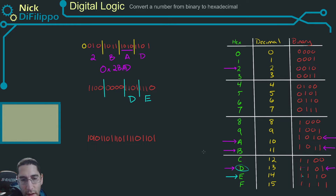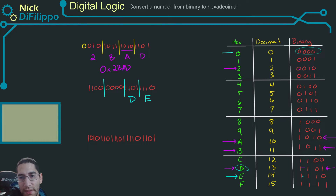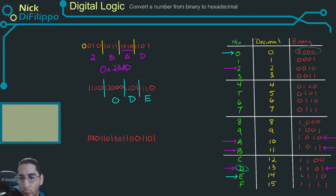Next, 0000 is a hex zero. And 1101 is a C.